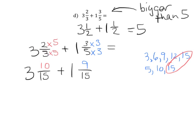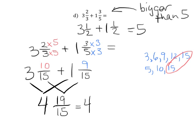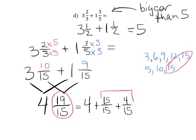So now we're ready to add. We can add the whole numbers: 3 plus 1 gives us 4. Adding the fractions gives us 19/15. So you've got 4 plus — now I'm going to expand that 19/15 to 15/15 plus 4/15. We know that 15/15 is equal to one whole. So we end up with 5 and 4/15 as our answer.